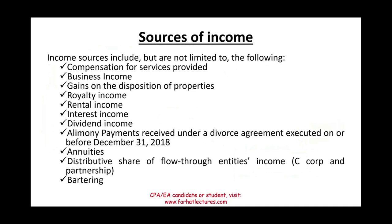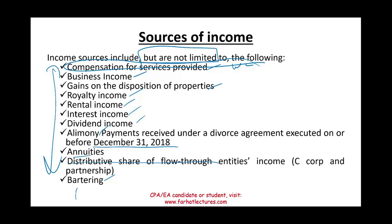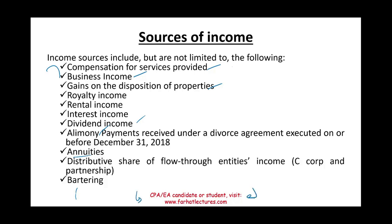In summary, income sources include but are not limited to: compensation for services (W-2), business income, gain on disposition of property, royalty income, rental income, interest income, dividend income, alimony payments under divorce agreements executed on or before December 31, 2018, annuities, distributive shares from flow-through entities (S-corp, partnership), and bartering. In the next sessions, we'll cover each income type separately, starting with W-2. Visit Farhat Lectures for true-false, multiple choice, and additional exercises. Study hard — your accounting certification is worth it.